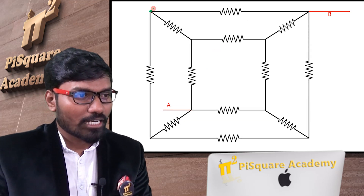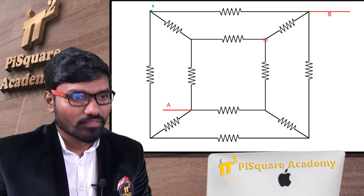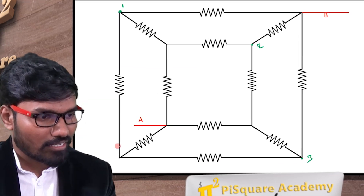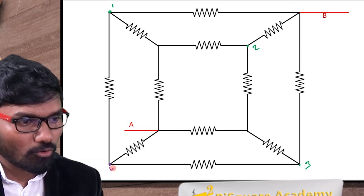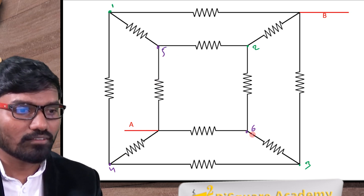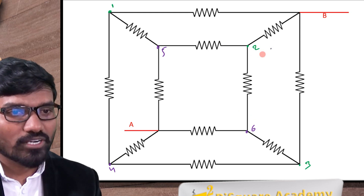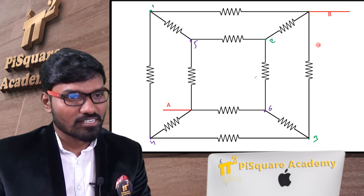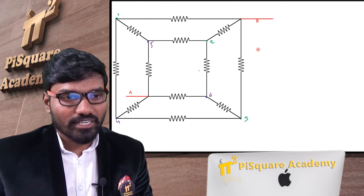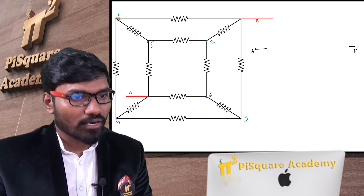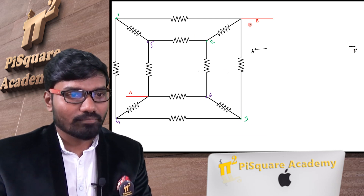So let us find out R_AB by looking at this diagram, because both diagrams are the same — I am just redrawing the structure. Let me name this point as 1, this point as 2, this point as 3. And this point as 4, this point as 5, this point as 6. So I have 6 extra points apart from A and B. This is point A, and here we have point B. Points 1, 2, 3 are connected from B.